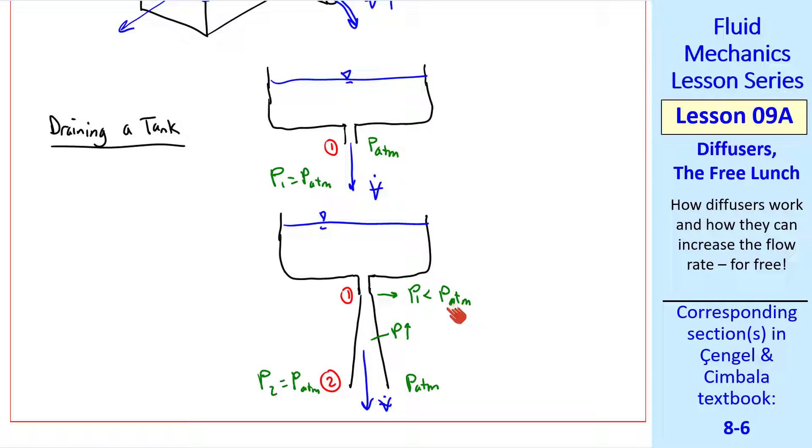Since P increases through the diffuser, P1 has to be less than P atmosphere, since it's less than P2. So if you look at 1 by itself, in both cases, we have a lower pressure in this case than we had in this case.